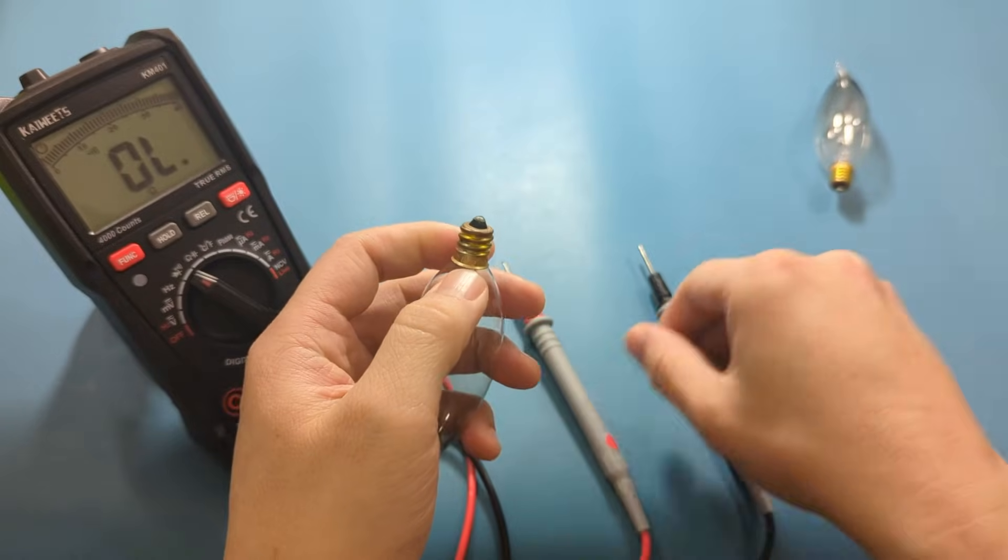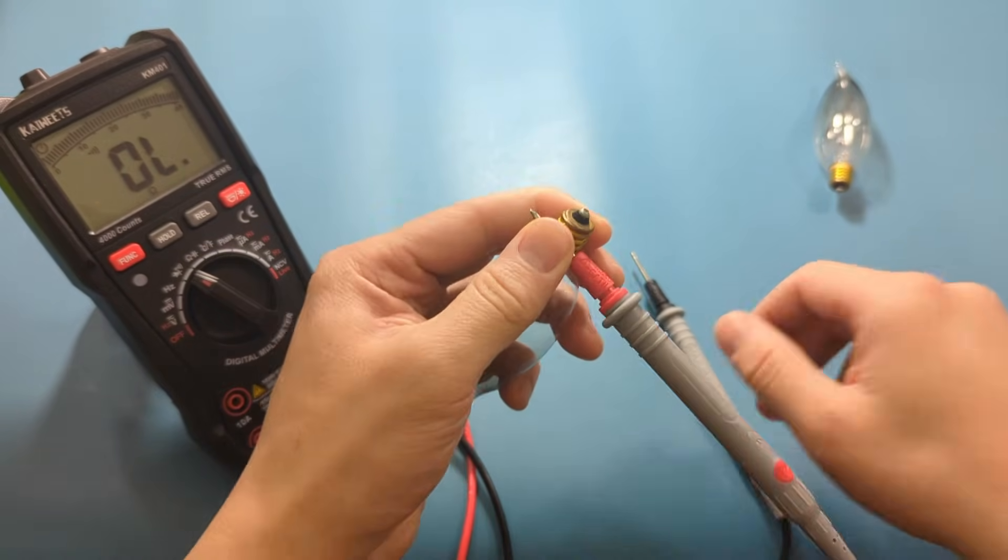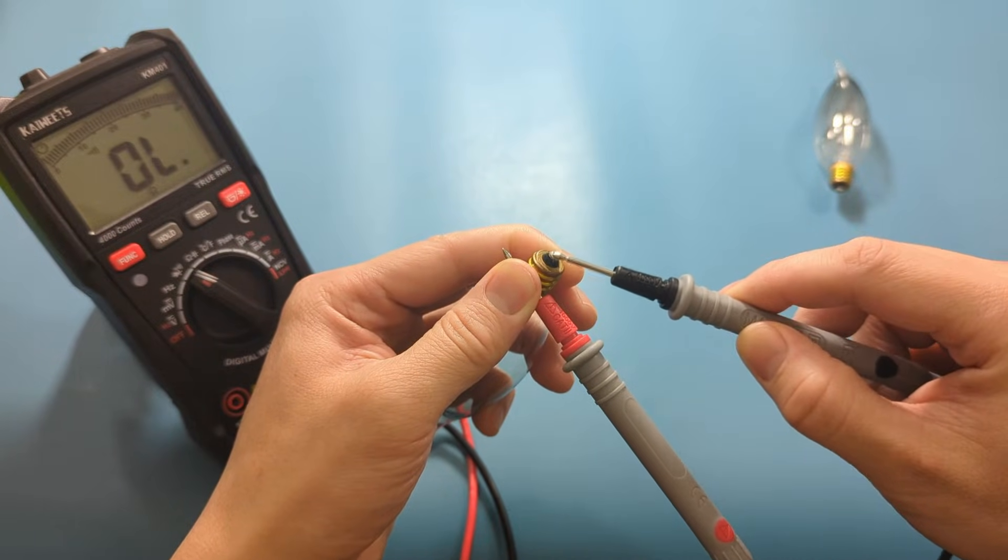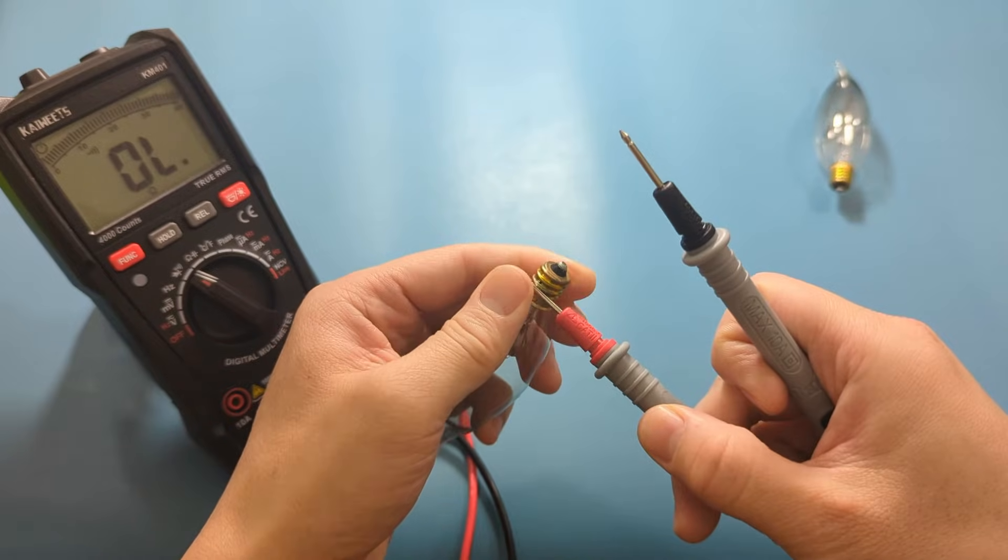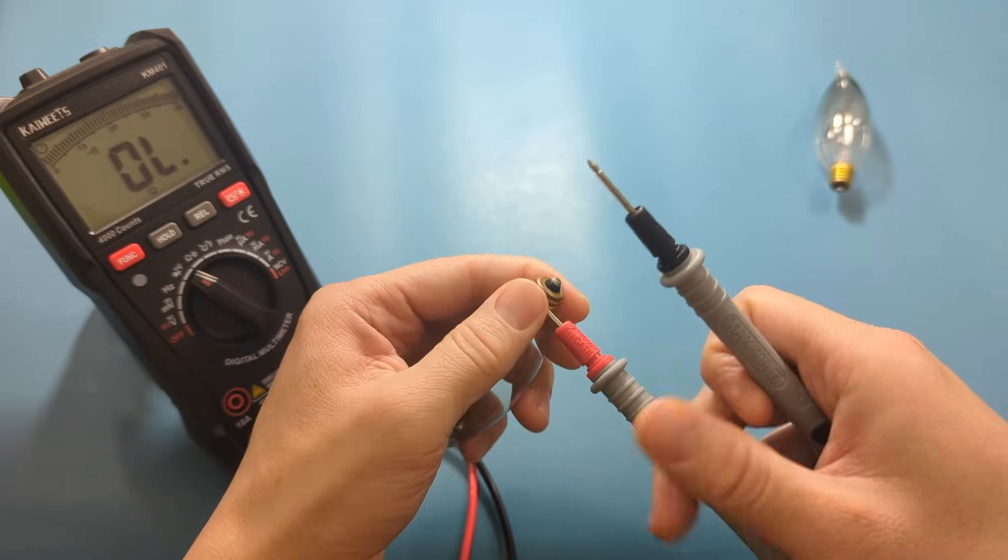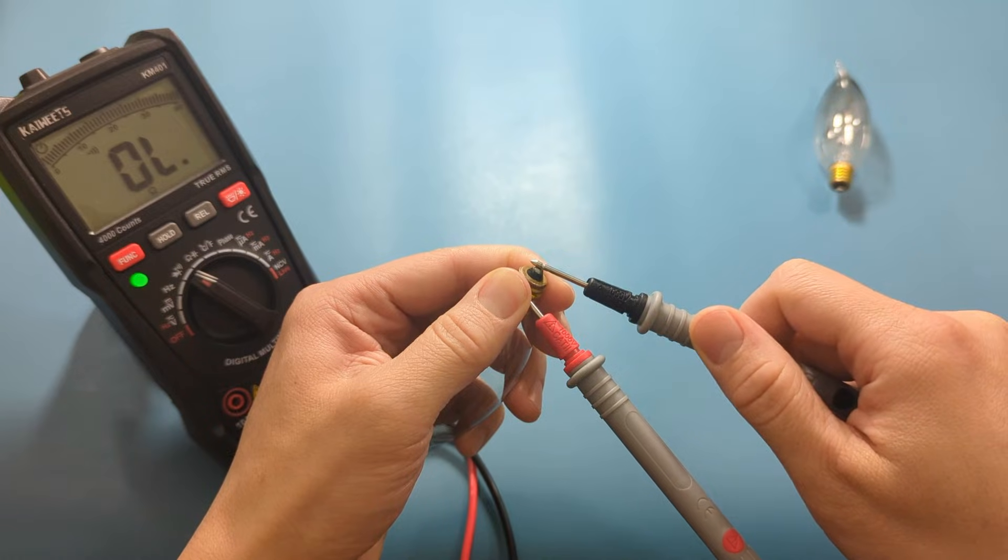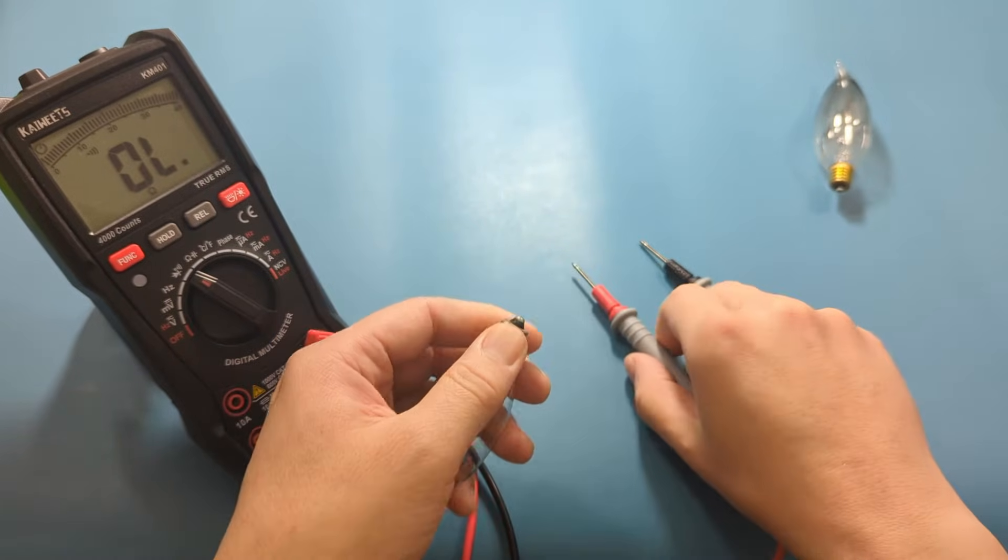To test for continuity, press one of the probe leads to the threads or the screw base. Touch the other probe lead to the tip or the electrical contact end. If you hear a beep, there is continuity and we can continue with the next test.